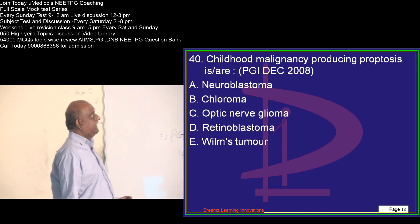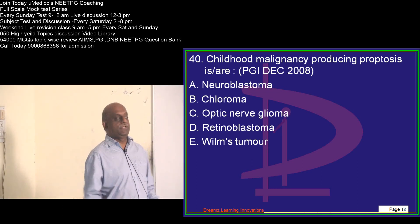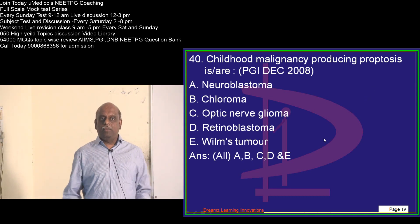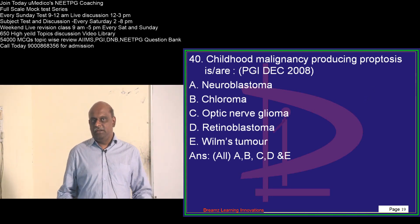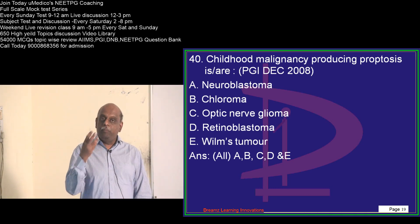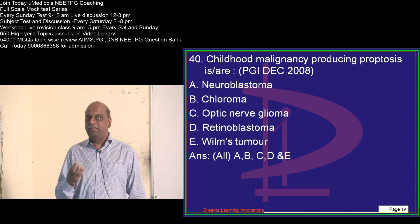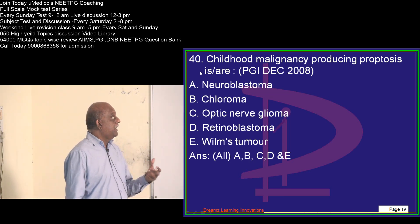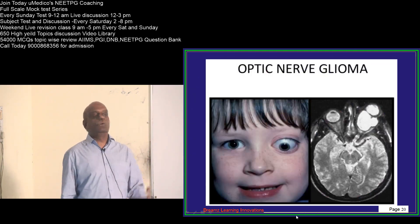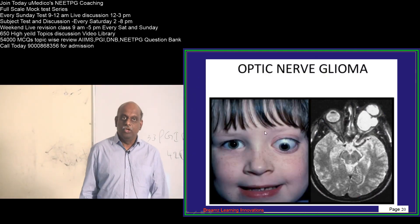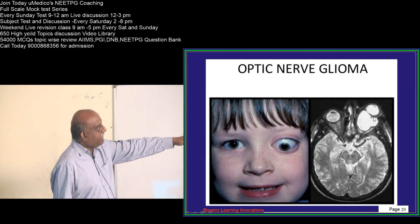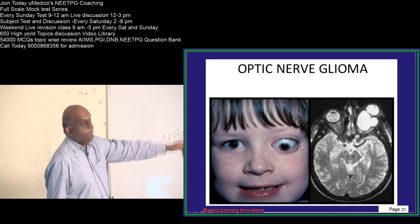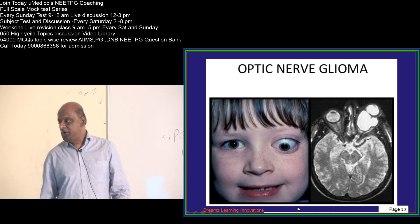Childhood malignancies that lead to proptosis — classically neuroblastoma and chloroma. Chloroma occurs whenever there is acute myeloid leukemia in children; myeloid deposits occur in various locations including the orbit. Similarly, optic nerve glioma, retinoblastoma, and Wilms' tumor are all implicated. Optic nerve glioma can lead to development of proptosis.